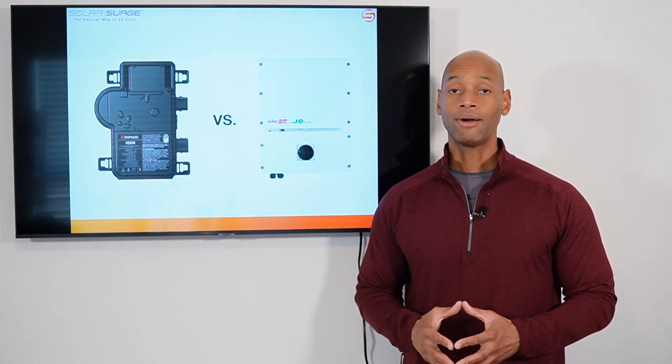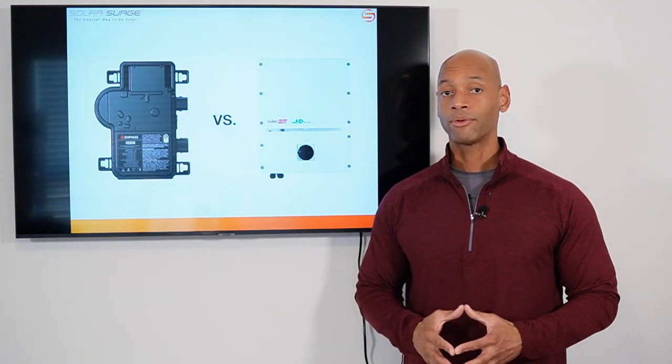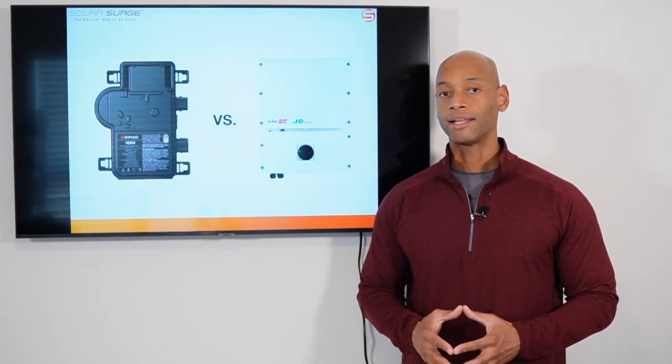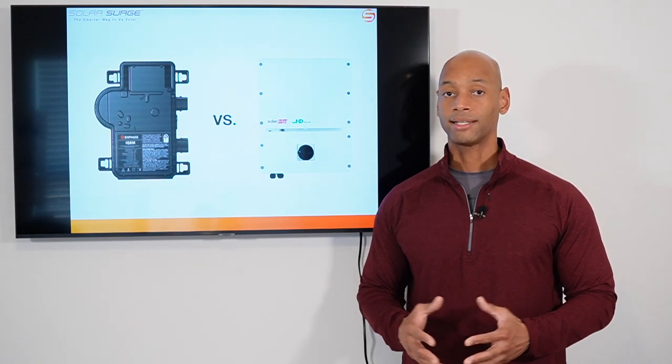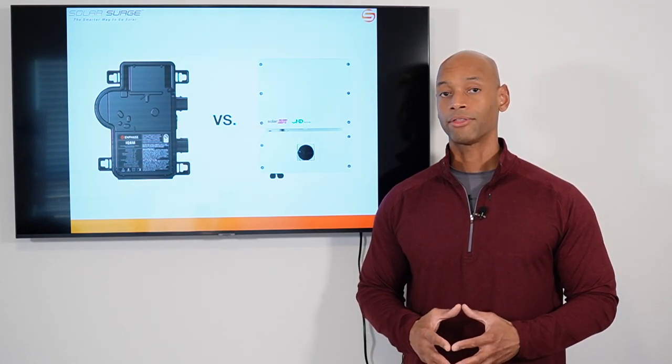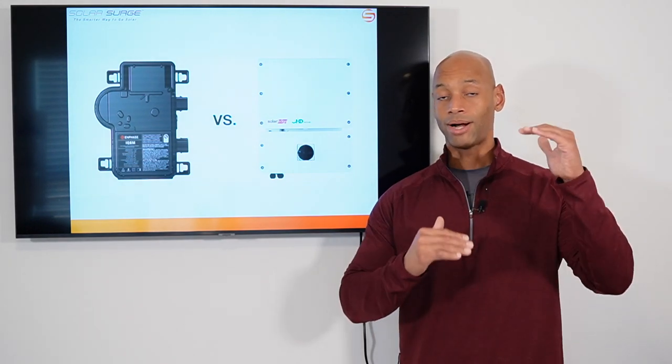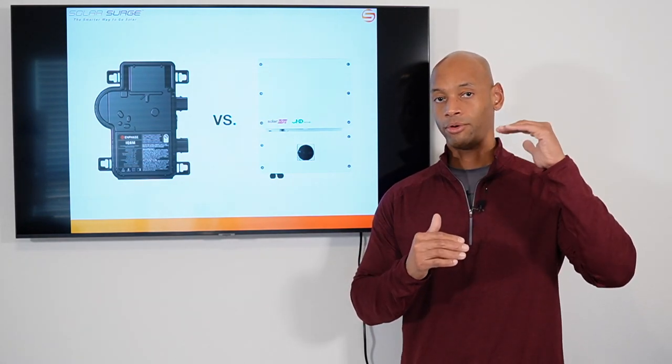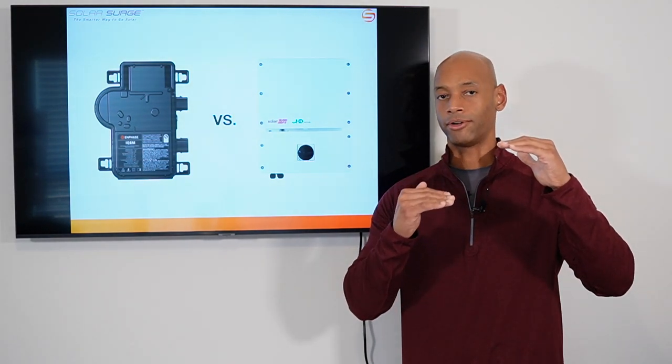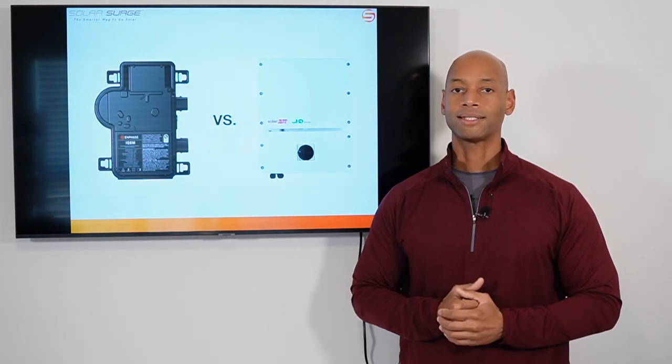So as of this recording, one of our most popular solar panels for residential installations is the Aptos 440 watt panel. However, the most popular microinverter that we're pairing with that is the Enphase IQ8A, which still has a continuous power rating of only 349 or 350 watts. So there is a 90 watt difference there in terms of what the panel can do at max versus what the microinverter can sustain at max output.